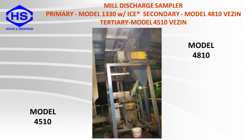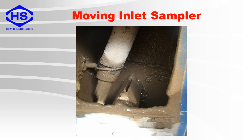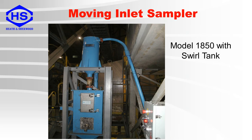Here is an example of a metallurgical sampling station. The primary is a linear cross-cut sampler, and the secondary is a rotary vesen sampler. The final sample then goes into a bucket. One note about secondary samplers is that for each cut of the primary sampler, the secondary sampler should take a minimum of four cuts. This is an example of a moving inlet sampler, where you can see the hose at one side of the cutter. In this case, the sampler has a swirl tank located above the moving inlet sampler, which is used to dissipate any pressure in the sample line before going to the sample cutter.